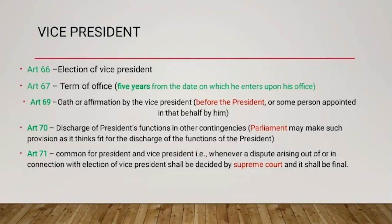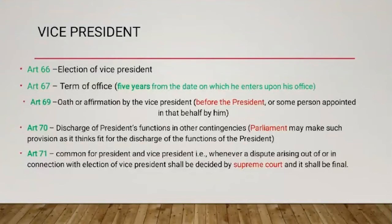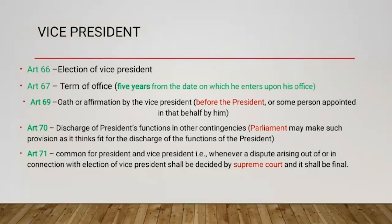Every Vice President shall, before entering upon office, make and subscribe before the President or some person appointed in that behalf, an oath or affirmation. Article 70 states that Parliament may make such provisions as it thinks fit for the discharge of the functions of the President in any contingency not provided for in this chapter of Part Five of the Constitution.